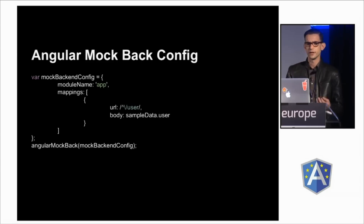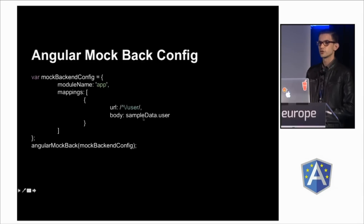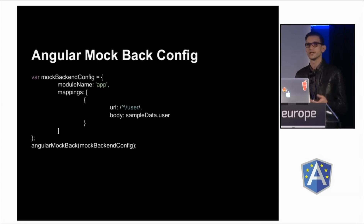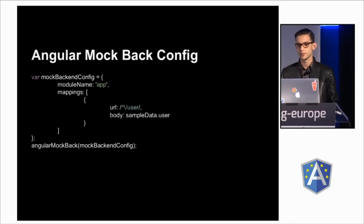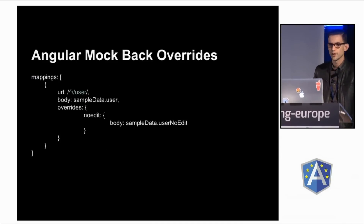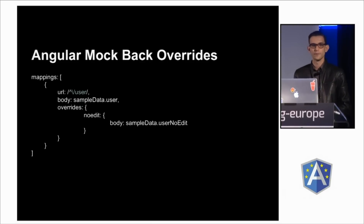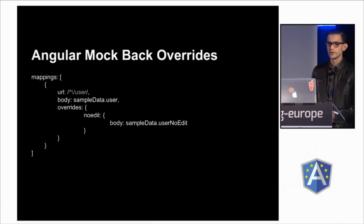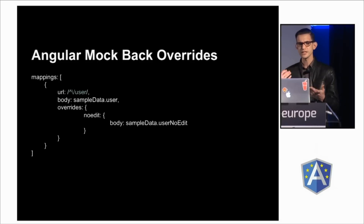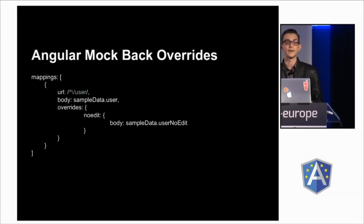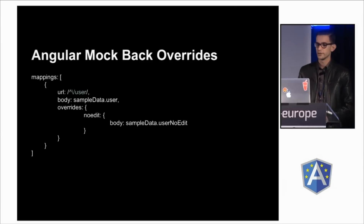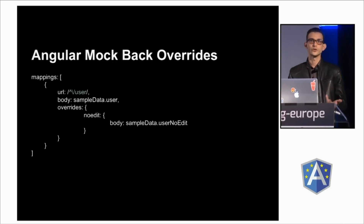The really cool thing in Angular Mockback is that in this scenario I'm passing in a user. Let's say you have an application where this user has edit capabilities — what if I want to see my application in view-only mode, like if I didn't have edit capabilities on this user? The answer to that is overrides. All you have to do is pass an override to your mapping, and you can have as many overrides as you want in that overrides property. You just give it a name and what property you want to override — in this case, I'm just changing the sample data and passing in a user with no-edit in this scenario.